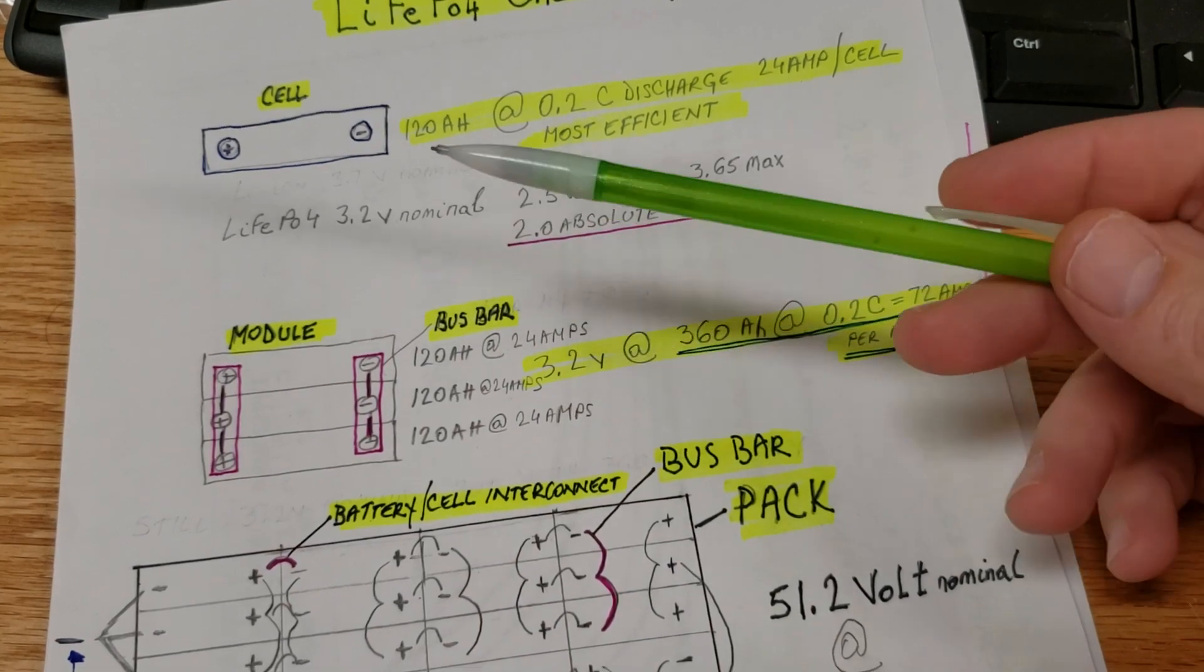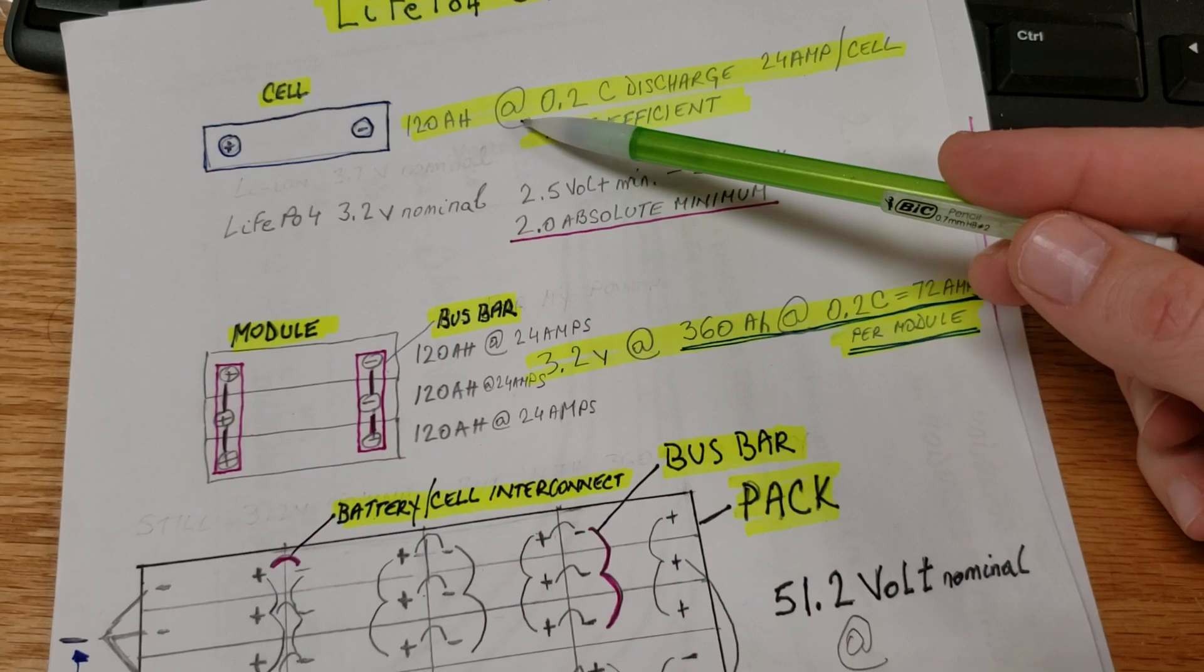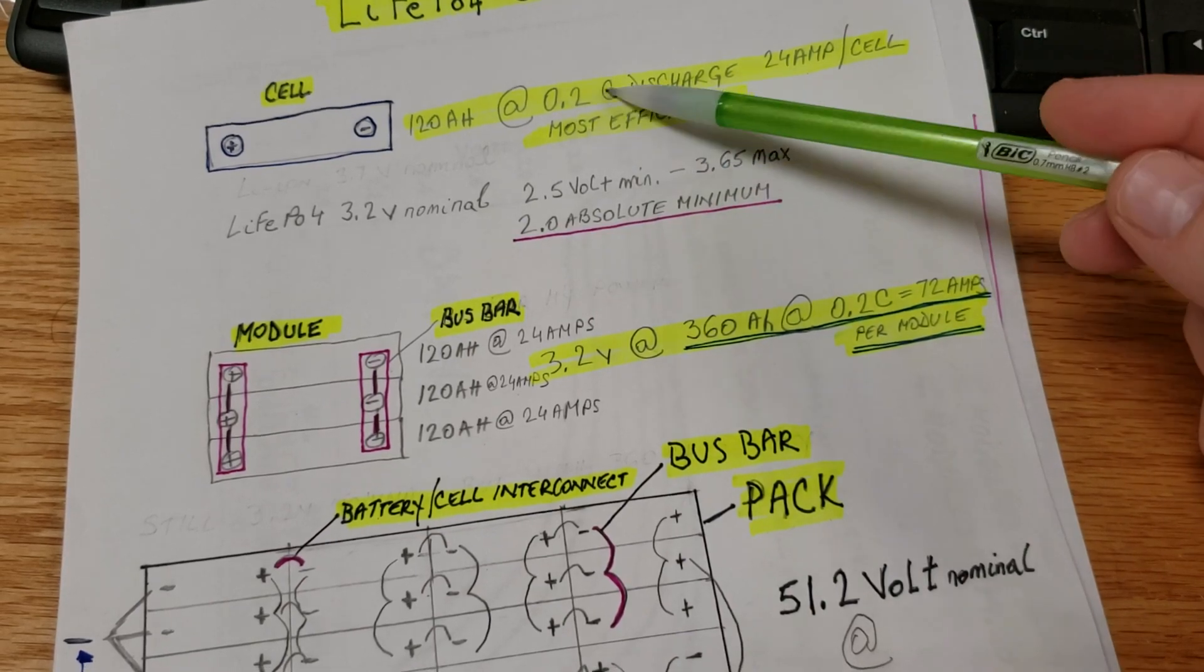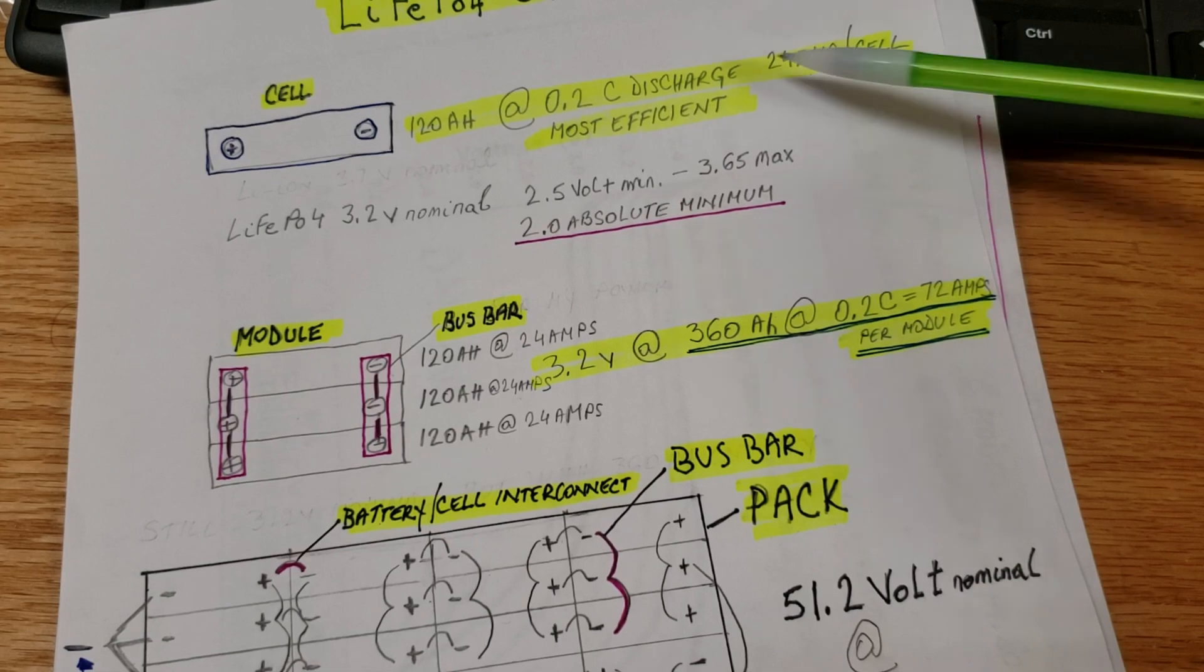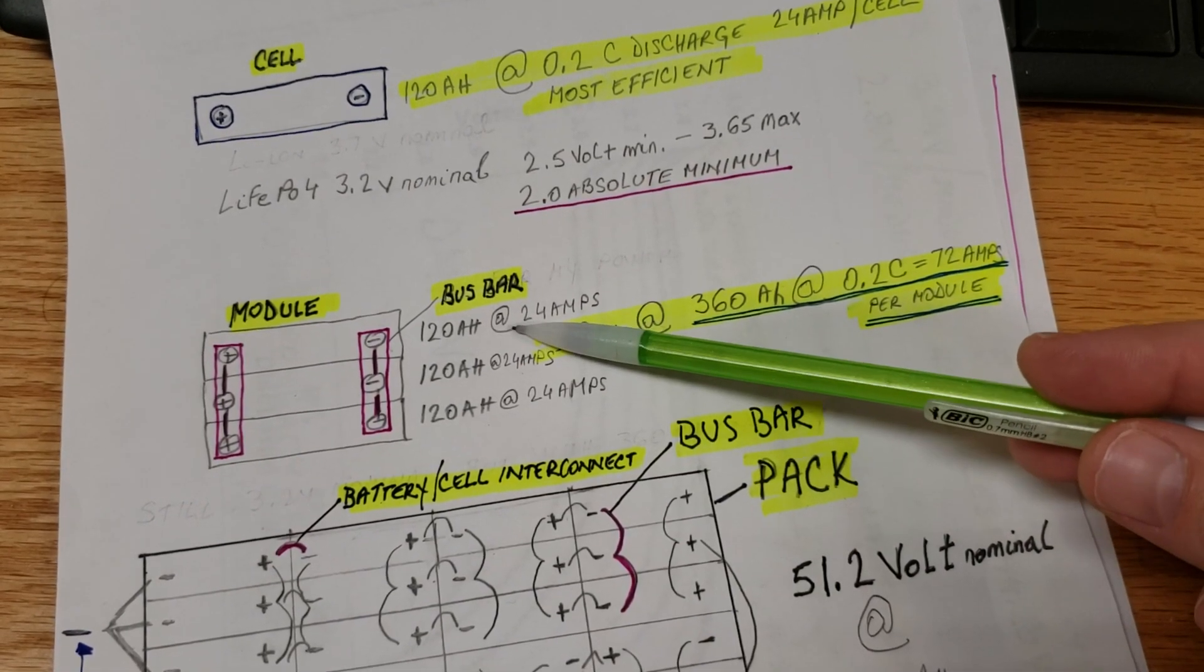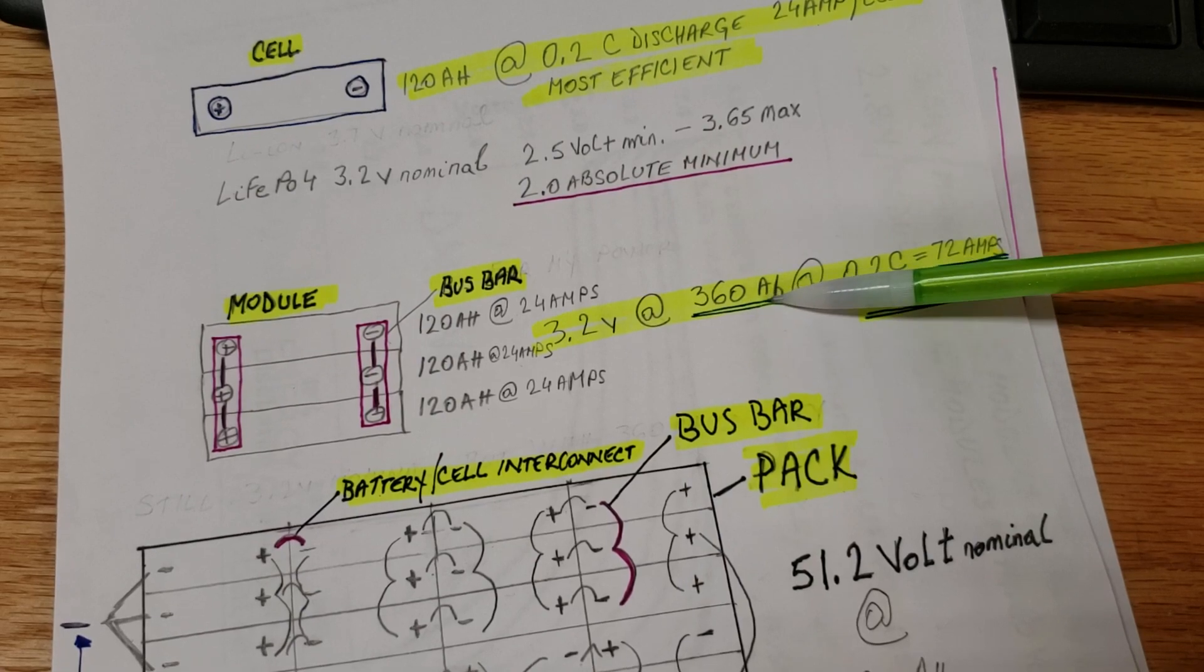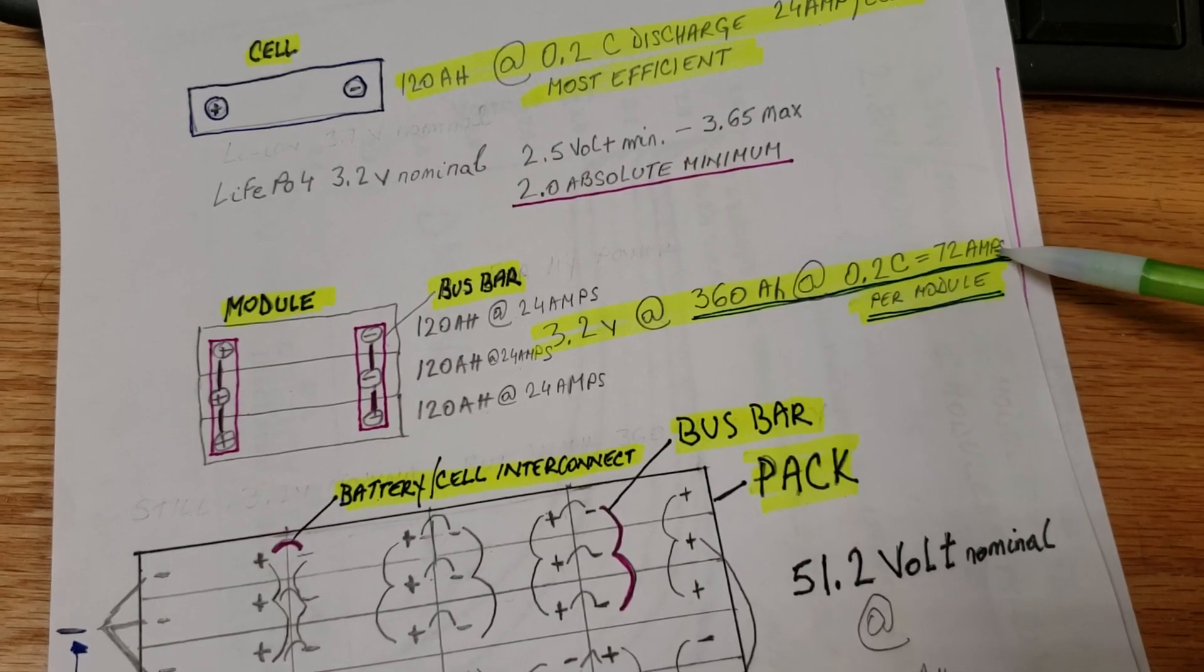Here's the information for the cell and the module. Each cell is 120 amp hours. We will explain in the chemistry charge chart for the lithium iron phosphate battery. The best performance is at 0.2C discharge rate, which for my cell would be 24 amps per cell, most efficient. For the module, we have three cells connected in parallel, meaning you are adding the amperage of those cells. Three cells at 120 amp hours each gives us total of 360 amp hours at 3.2 volts, at the nominal discharge rate of 0.2C, that is 72 amps per module.